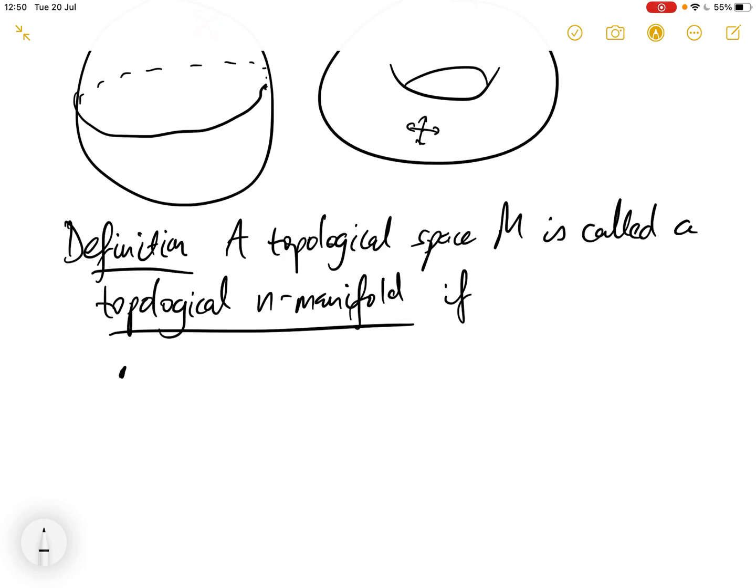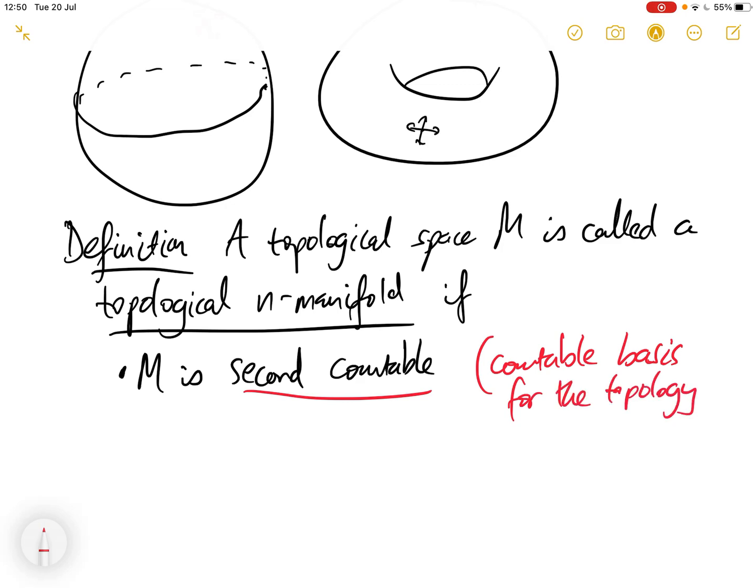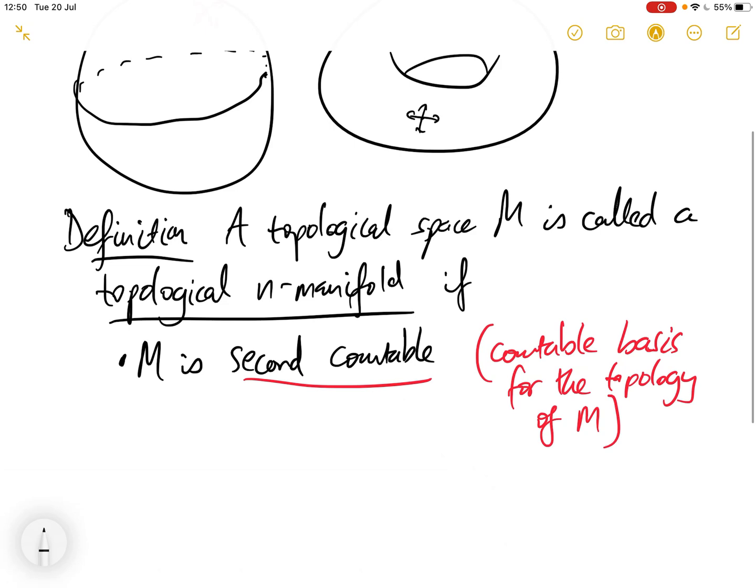Firstly, we require that M is second countable. This means there's a countable basis for the topology of M. Recall that a basis for the topology of a topological space is a family of open subsets of that space, such that every open set in the topology is a union of some subfamily of that basis B.